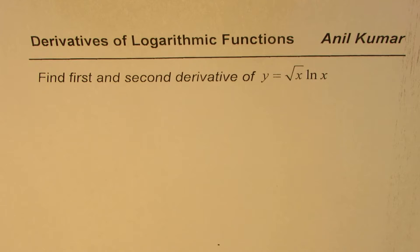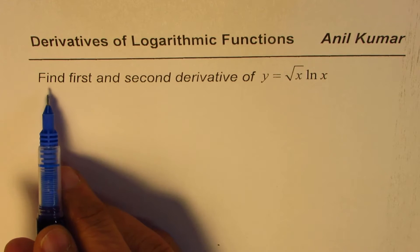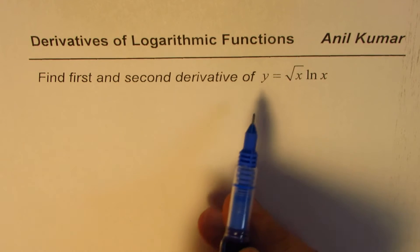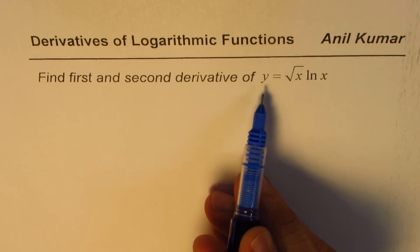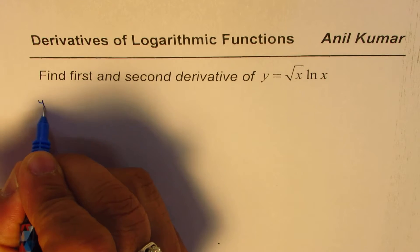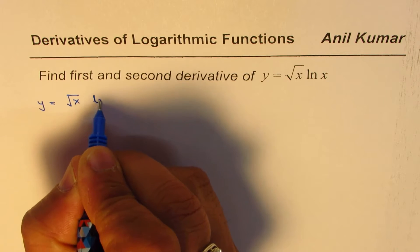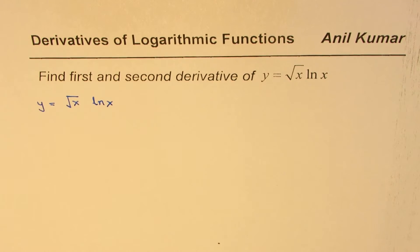I'm Anil Kumar and in this video we'll try to understand how to find higher order derivatives of logarithmic functions. The question is: find the first and second derivative of y equals square root of x times ln x. We are given y equals square root of x times ln x, and we can apply the product rule to find the derivative.